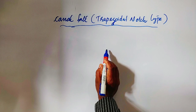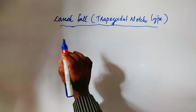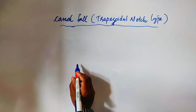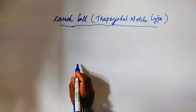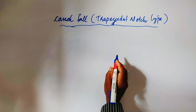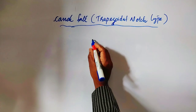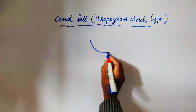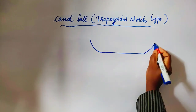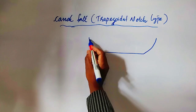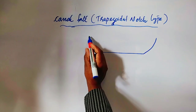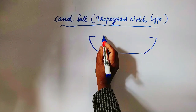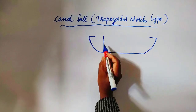This is a trapezoidal notch-type canal fall. This is a type of canal fall — a concrete structure, also called a canal drop. This figure shows the trapezoidal notch type with a high-crested wall on either side.